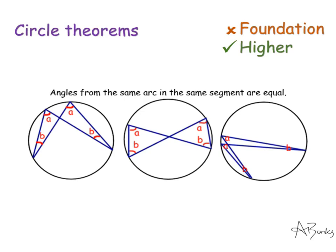The next circle theorem is that angles from the same arc in the same segment are equal. If you start with any arc and take a point on either side of the arc, then draw an angle touching the circumference, any other angle touching the circumference from that same arc will also be equal. By the same theorem, two angles created at the circumference from this arc here will also be equal.